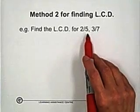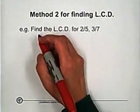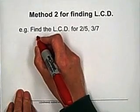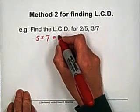Find the LCD for 2 fifths and 3 over 7. So multiply the denominators. We can multiply 5 with 7 equals 35.